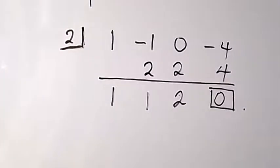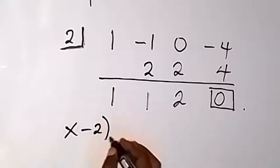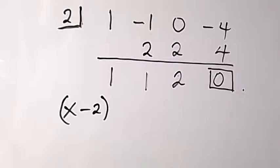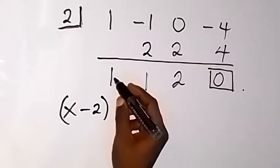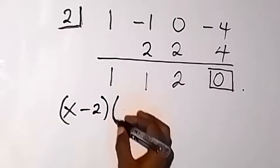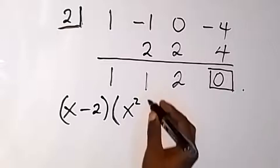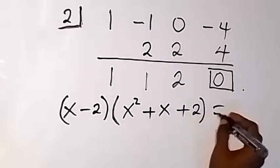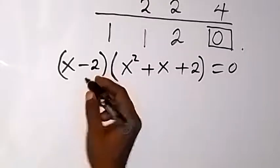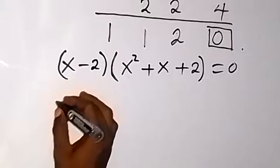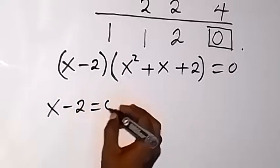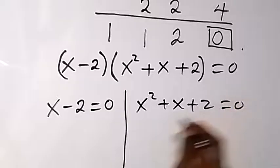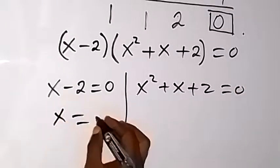Since the remainder is 0, x minus 2 is a factor. The other factor is a quadratic, where the coefficient of x squared is 1, so we have x squared. The coefficient of x is 1, giving plus x, and the constant is 2, giving plus 2. So we equate to 0 and have two cases: x minus 2 equals 0, and x squared plus x plus 2 equals 0. From the first case, x equals 2.